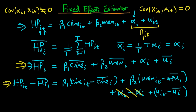That is a condition for the fixed effects estimator to be consistent. We also require that there is no serial correlation of errors, and we require that the errors are homoscedastic. If that is the case then fixed effects estimation will be consistent.